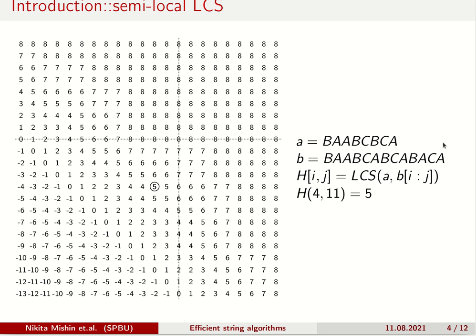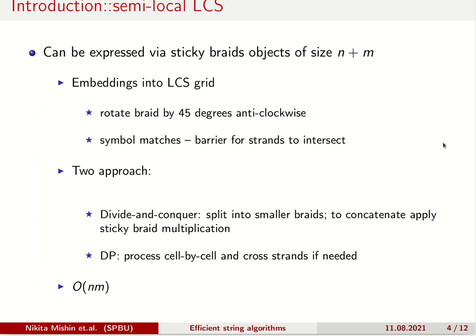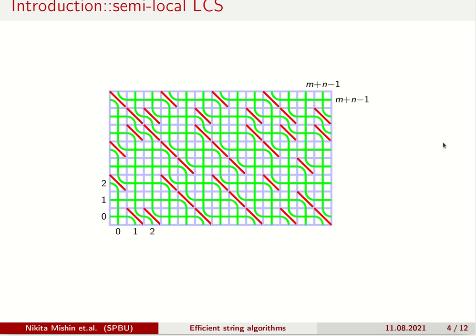Here we have an example for strings A and B and a query for LCS score of string A against specific substring of B. The interesting thing is that the semilocal LCS can be represented implicitly via permutations. Moreover, it is closely related to sticky braid. More precisely, a sticky braid of size n plus n can be embedded into LCS grid, so the problem of computing semilocal LCS is equivalent to construction of sticky braid. This allows us to apply two different approaches both with m times n time complexity. Here on the slide you can see the embeddings of braids to LCS grid.